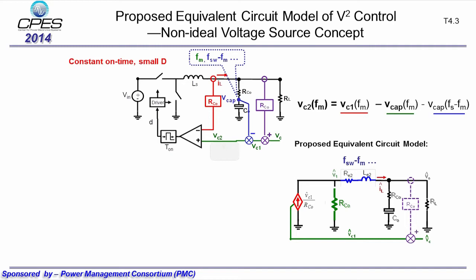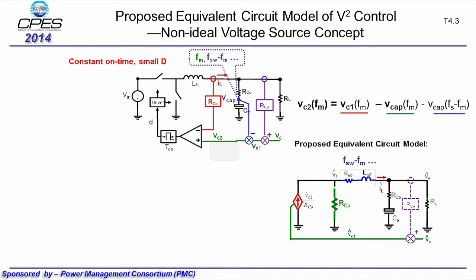This shows our proposed equivalent circuit model. VC1-FM is responsible for the red control source. The modulation frequency component of the capacitor voltage VCAP-FM is represented by a resistor RCO, and by Thevenin's theorem this resistor basically turns the current source into a voltage source. The sideband frequency component VCAP-FSW-FM is represented by an inductor LE2 in series with a resistor RE2, which represents the non-ideal voltage source, as LE2 and RE2 will form a double pole at half of switching frequency by resonating with the output capacitor. LE2 determines the double pole position and RE2 is related to the damping of this double pole.